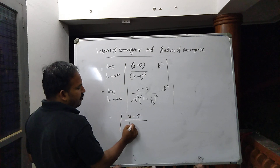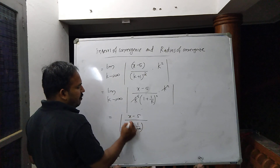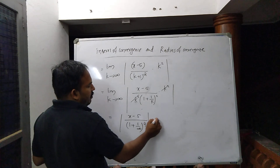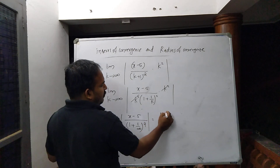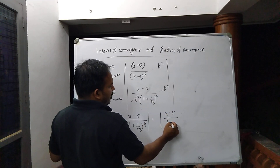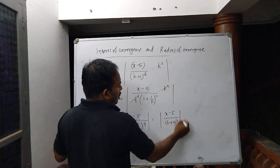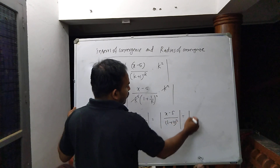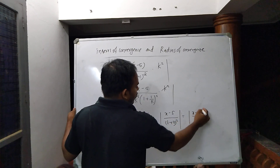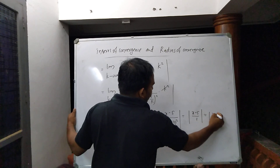Taking the limit, (1 plus 1/k) squared approaches (1 plus 0) squared equals 1. So rho equals the absolute value of (x minus 5) divided by 1, which is simply the absolute value of (x minus 5).